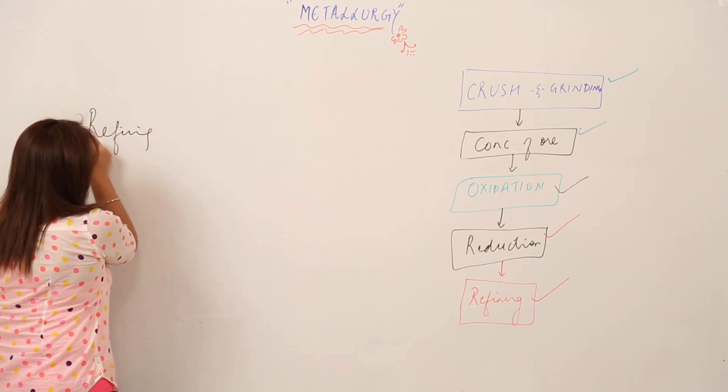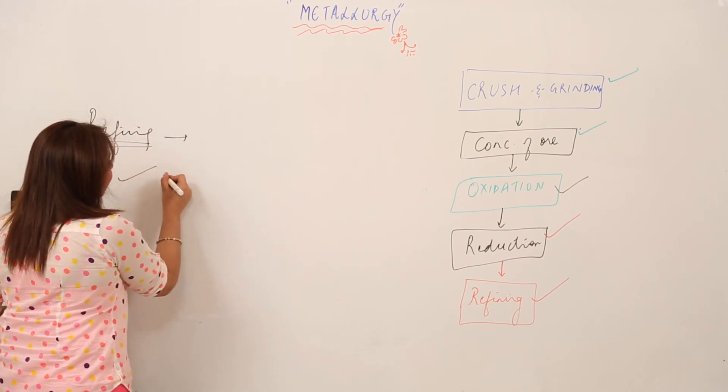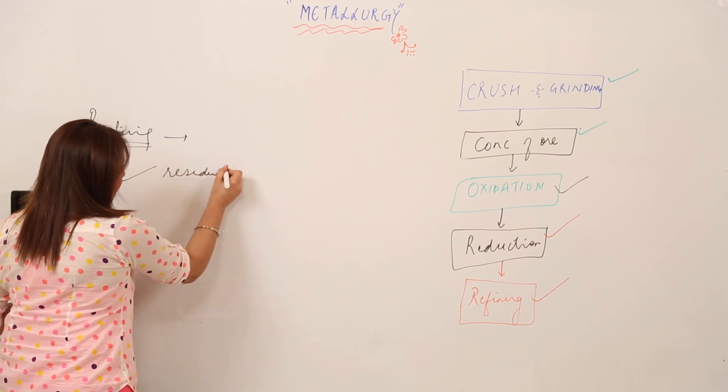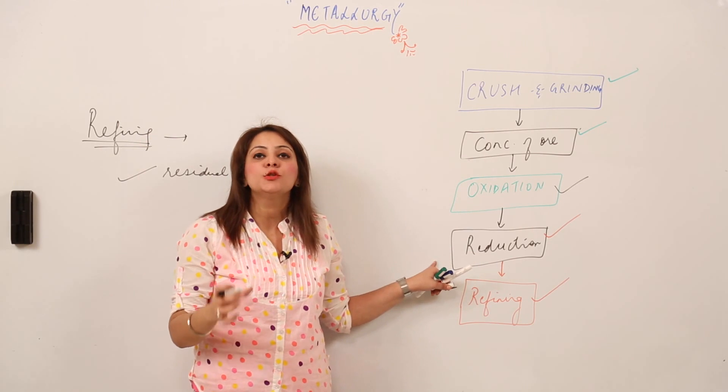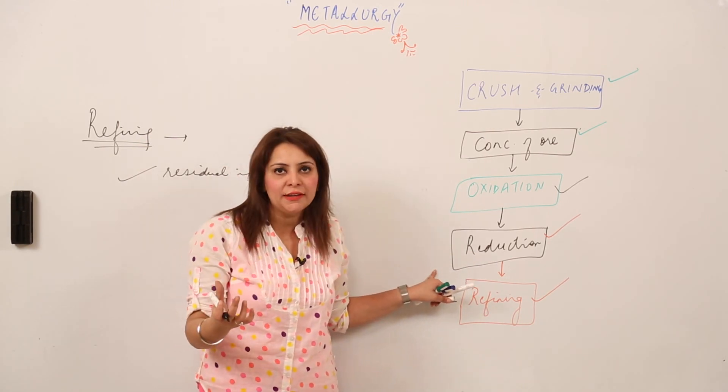Refining is done to remove residual impurities. After reduction we get a metal, but that metal is still not pure - it contains certain residual impurities.